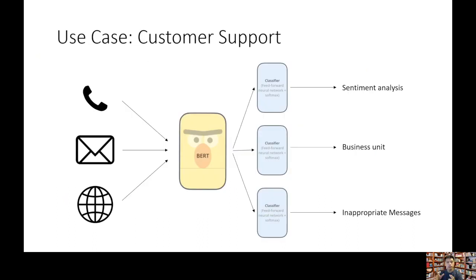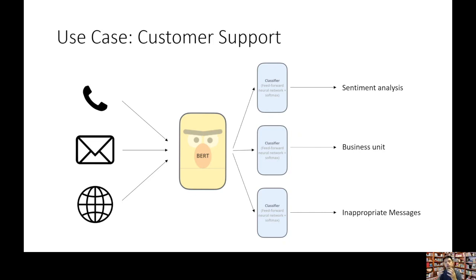For a real-life example, let's say we have a customer support center that receives calls, emails, and social feeds. Assuming everything is converted to text format, after we send it through BERT, BERT acts as the featurizer — it turns those words into numbers. Then we feed those to different classifiers. For example, we can feed the output of BERT into a classifier that gives us sentiment analysis: whether customers who call in are happy, unhappy, or neutral with our service.